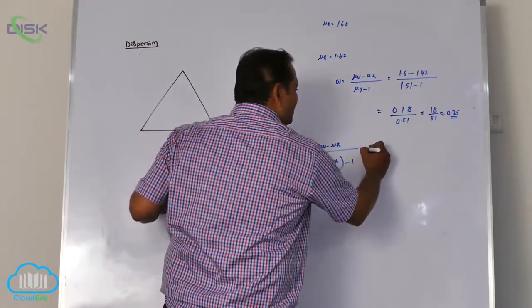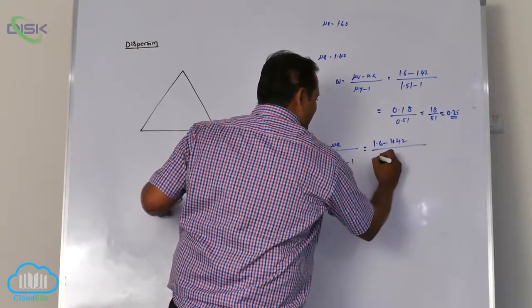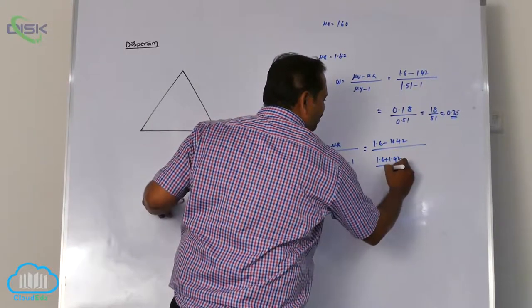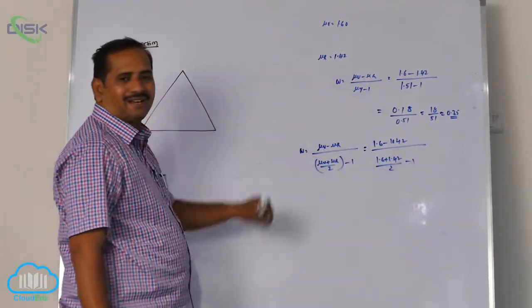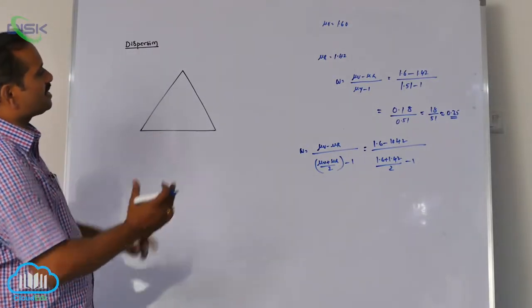Same thing, now 1.6 minus 1.42 by what, it is 1.6 plus 1.42 by 2 minus 1. I think you can do the calculation, it's not a big issue. In this way they can ask you questions based on dispersive power and their conditions.